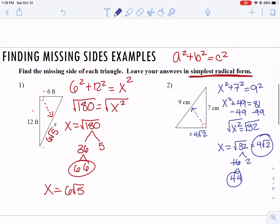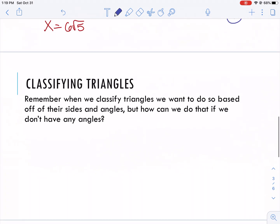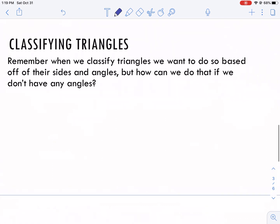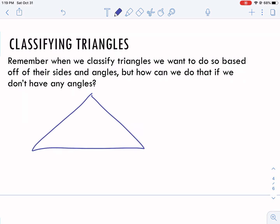Now let's talk about what it means with its converse. Remember, back to our first week when we classify triangles, we want to do so based off of their sides and angles. So what I mean by that is if this is 10, this is 10, and this is 18, we know it's isosceles.